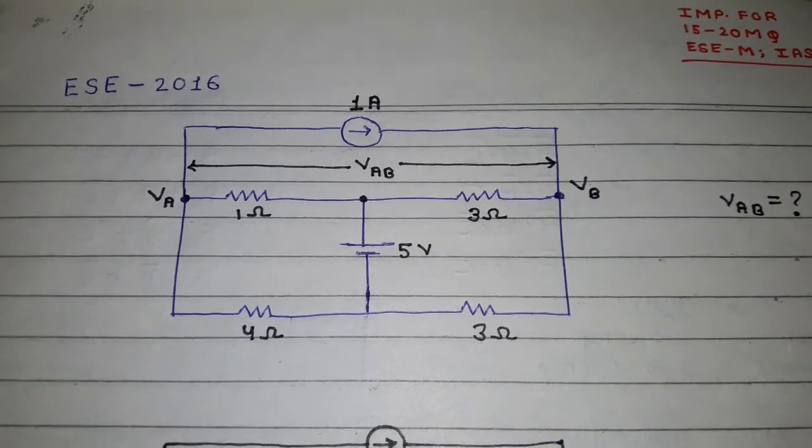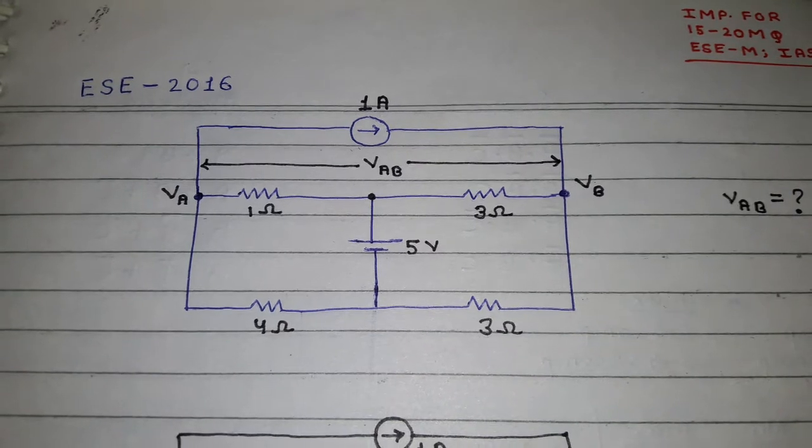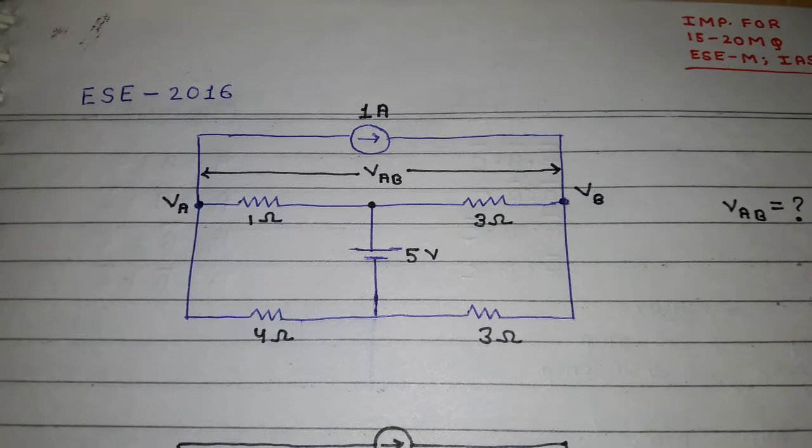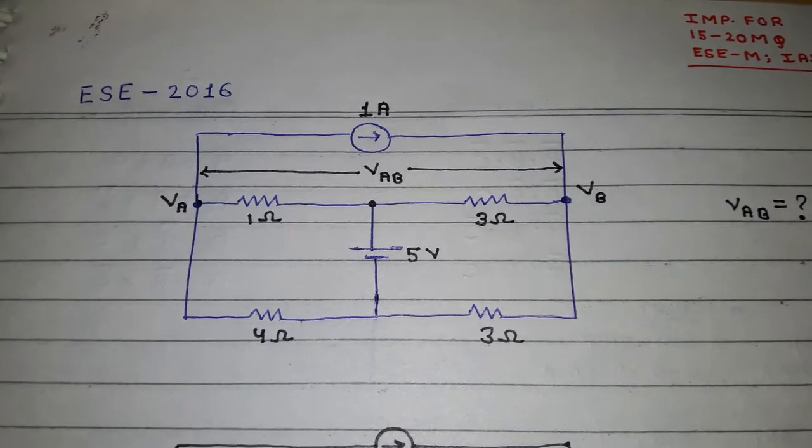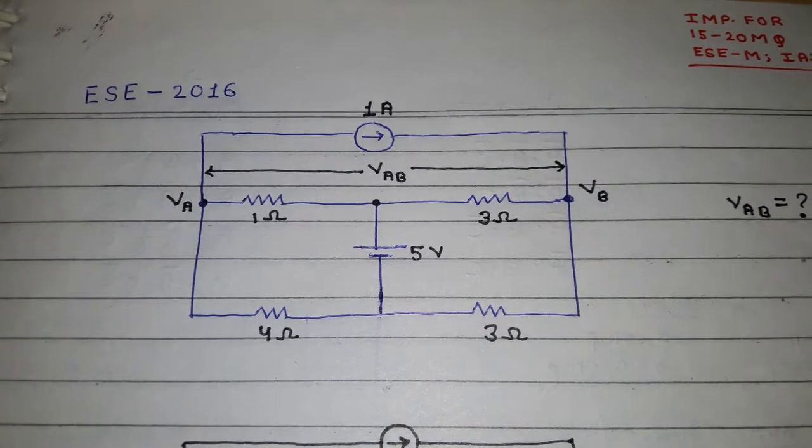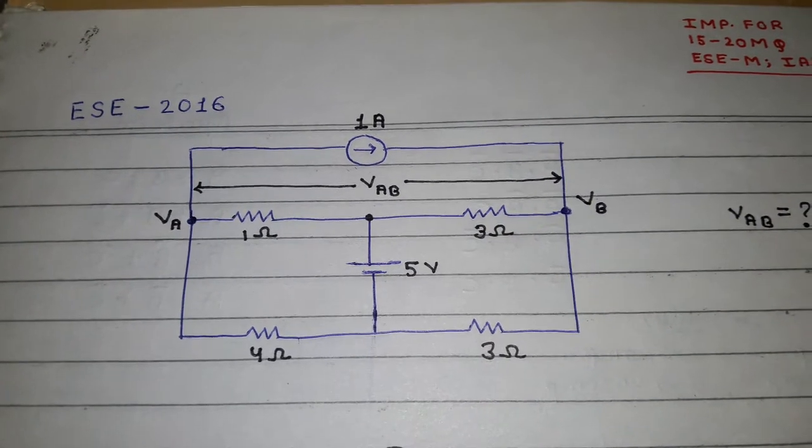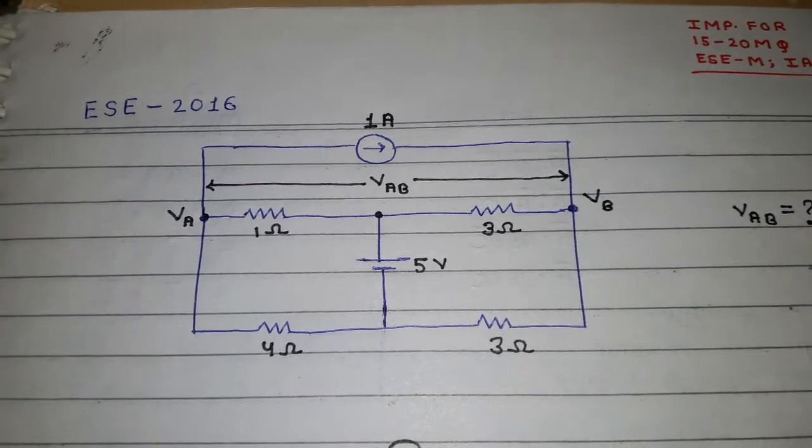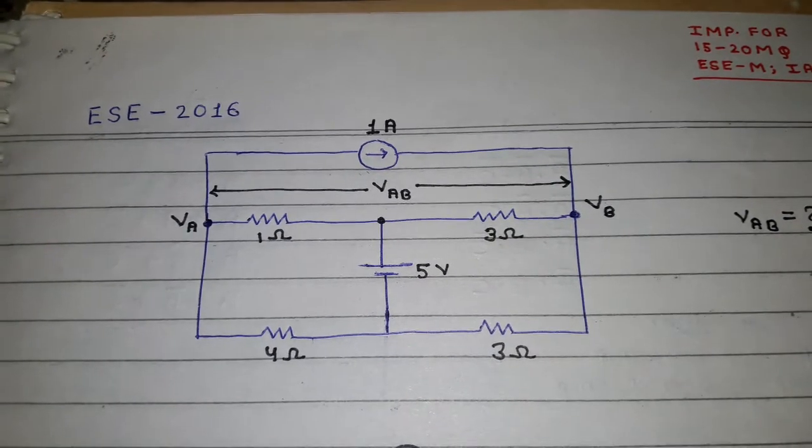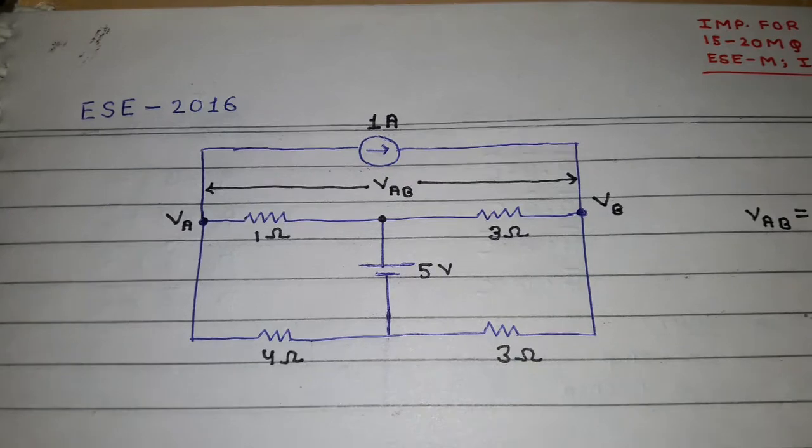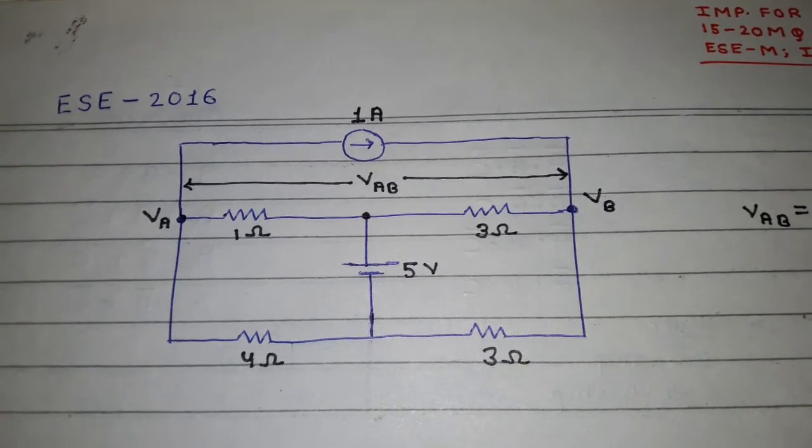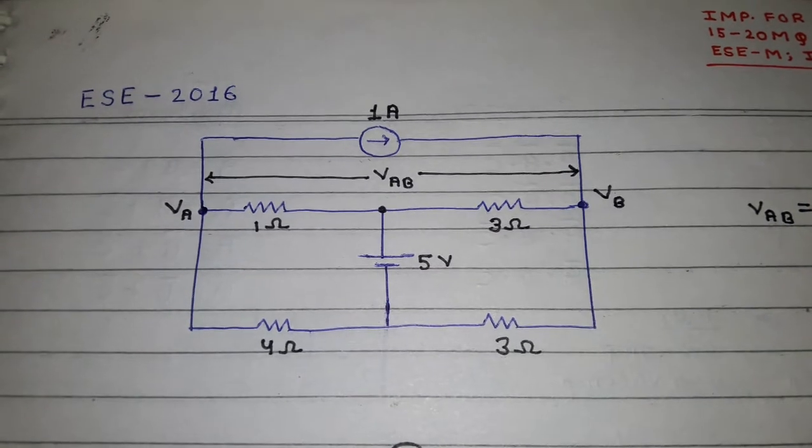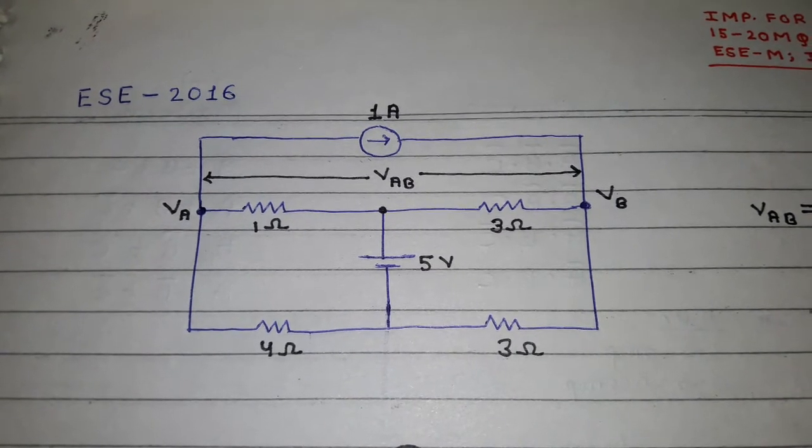Since it is mentioned that sources are not ideal and they are asking something regarding node voltage, it is a clear indication that you need to apply nodal analysis. But the problem is you won't be able to apply nodal analysis in the usual way. This question is a bit different and it will be tricky for you to analyze it if you look at the circuit right now.